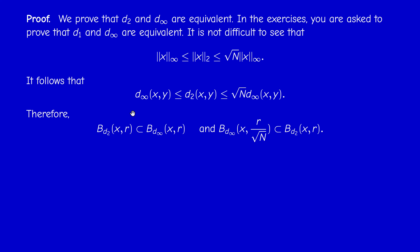It follows that the ball with respect to d₂ of center x and radius r is contained in the corresponding ball with respect to d∞ of the same center and radius. If y is in the d₂-ball, then d₂(x,y) < r, so the smaller d∞ distance is also less than r. This inclusion results from the inequality, but pay attention to the reversal of order: the bigger distance corresponds to the smaller ball.